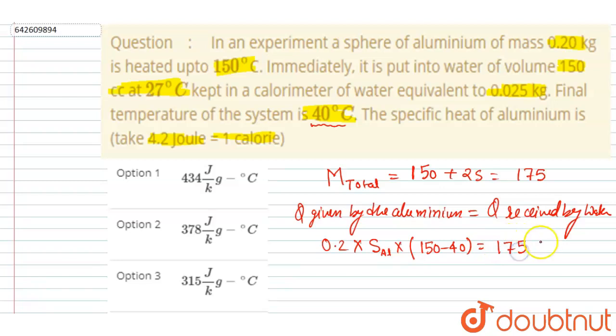The water is 175 gram and the specific heat of water is 4.2 joule per gram. Now the change in temperature, you can see initially it was having a temperature of 27.